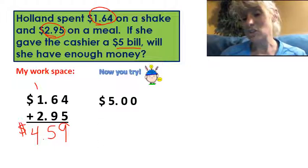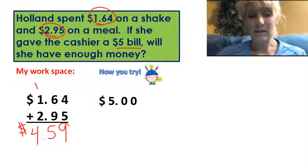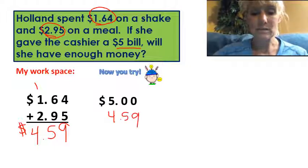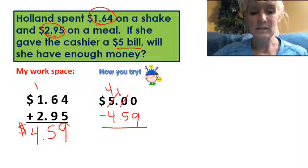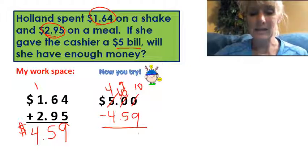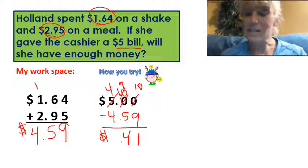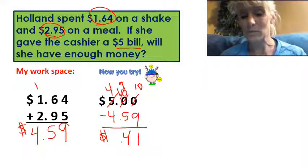Let's find out how much change she gets back. We're going to take that four dollars and fifty-nine cents and subtract it. We have to go over here, make this a ten and it becomes a nine. This becomes a ten. We have a one. We have four. Drop the decimal point down. This tells me that yes, Holland has enough money — in fact she is over. She is forty-one cents over.